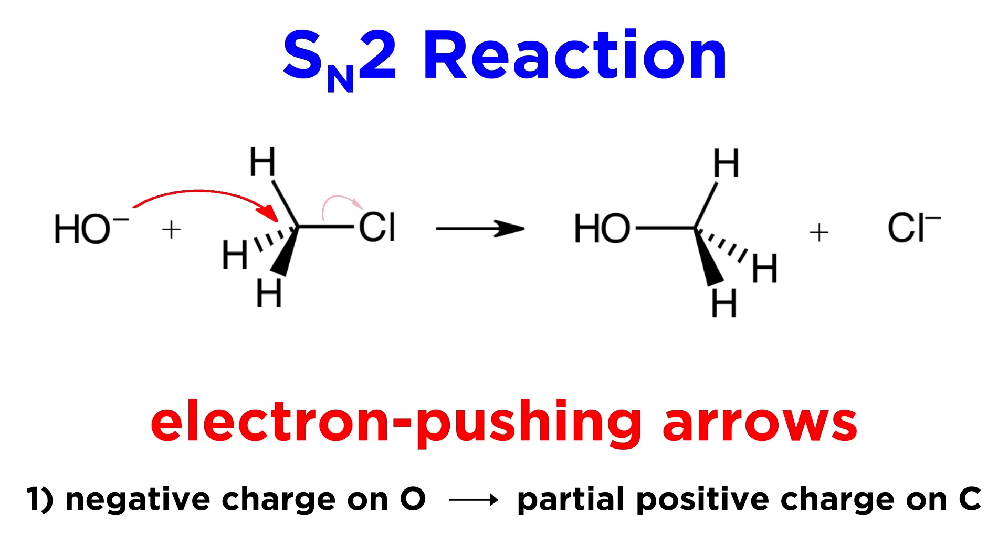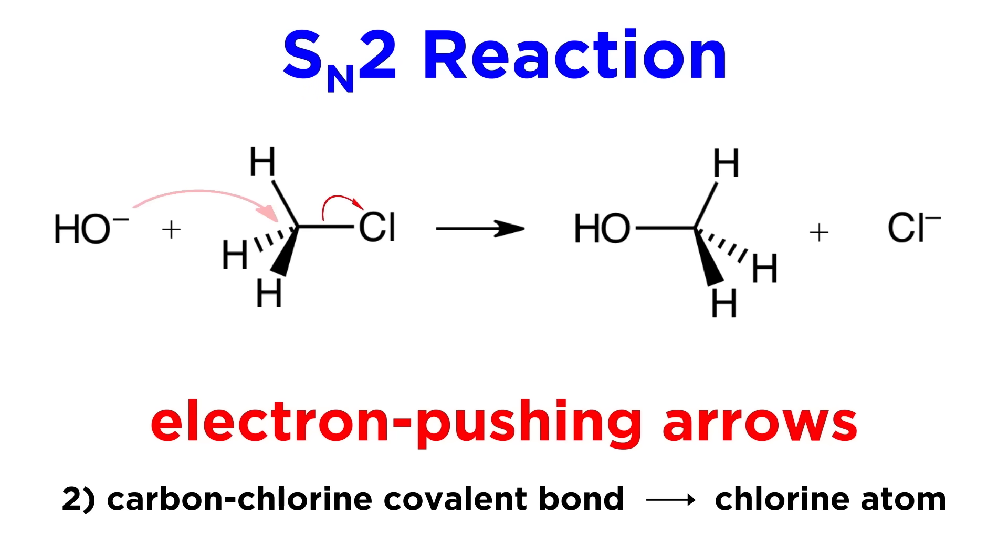They will always go from electron excess to electron deficiency. So we go from the negative charge on this oxygen atom, which just symbolizes one of its lone pairs, directly to the carbon atom itself. This arrow indicates that a bond is forming between these two atoms. Then another arrow is drawn from the carbon-chlorine bond, ending on the chlorine atom, indicating that the electrons in this covalent bond are leaving with the chlorine atom, giving us the chloride ion as a byproduct.